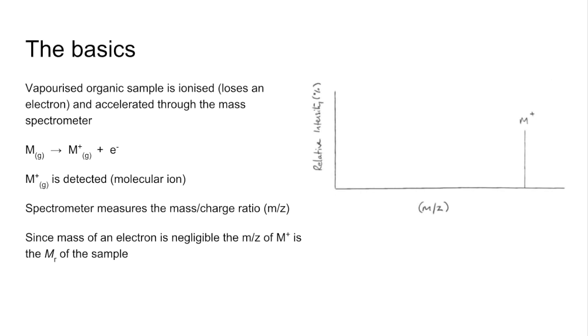So the very simplest spectrum would look like that. We have the mass to charge ratio along the x-axis, relative intensity on the y-axis, and there is that peak for the molecular ion. We'd refer to this as the molecular ion peak.